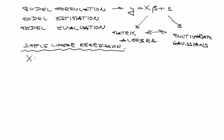X is the so-called design matrix. As we discussed previously, it holds the information about the independent variables in your model. What we are interested in today is the precise form of the design matrix for simple linear regression.